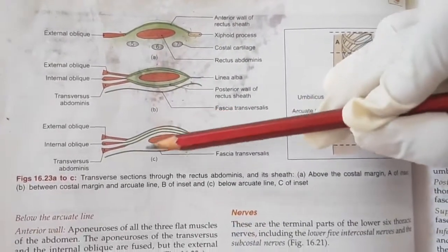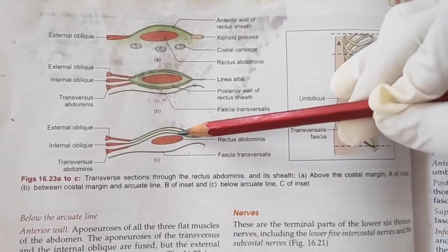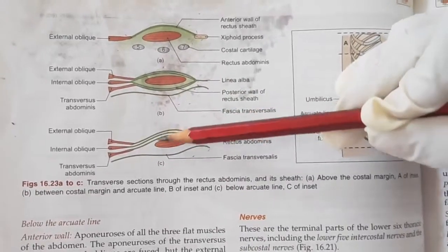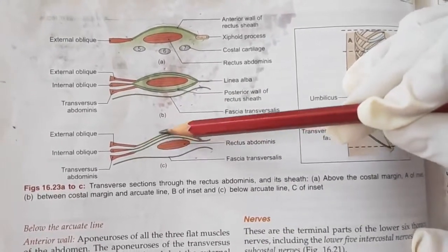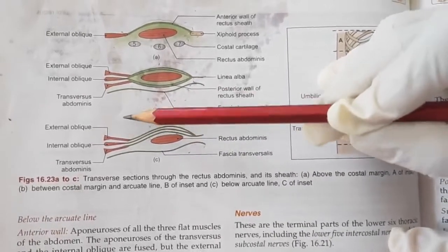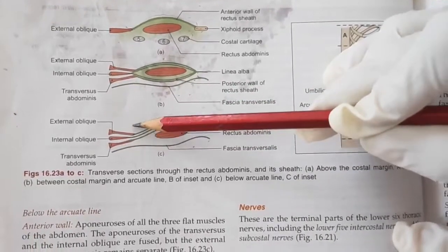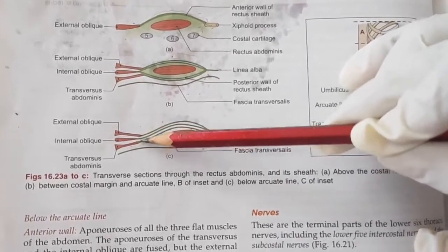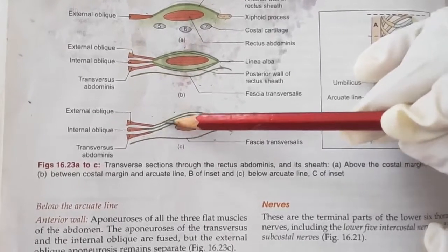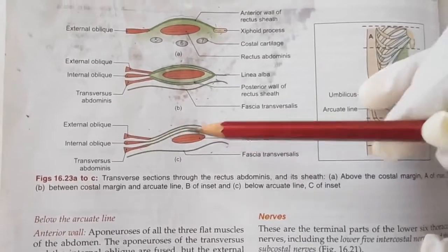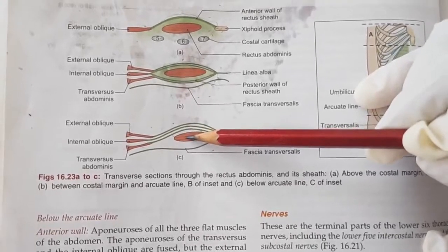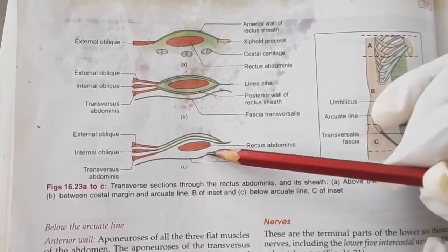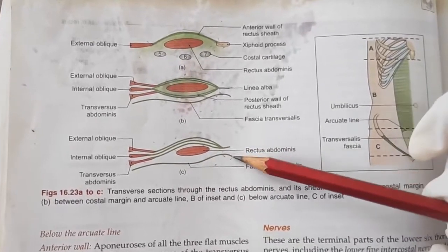Picture C shows the formation below the arcuate line. The arcuate line is midway between the umbilicus and the pubic symphysis. Below the arcuate line, the anterior wall of the rectus sheath is formed by the aponeurosis of all three muscles of the abdomen — external oblique, internal oblique, and transversus abdominis. The aponeurosis of all three muscles forms the anterior wall, but the posterior wall is deficient and the rectus abdominis is directly resting on the fascia transversalis.